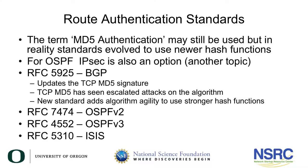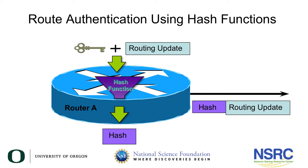Let's look at how route authentication works using cryptographic protection and hash functions — sometimes called MD5 authentication because MD5 is a commonly used hash function. Peer routers share a secret, essentially a password configured on both. The sending router takes that shared secret and the routing update, runs them through the hash algorithm (e.g., MD5), and gets a 128-bit hash output, which is then appended to the routing update and sent over the wire.